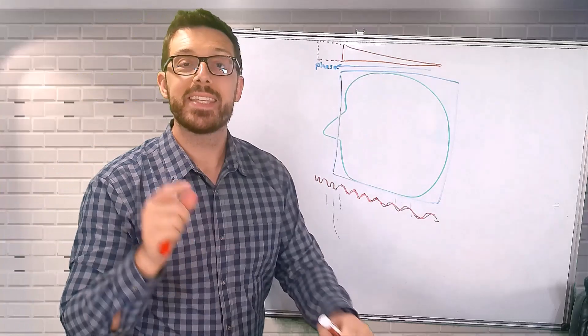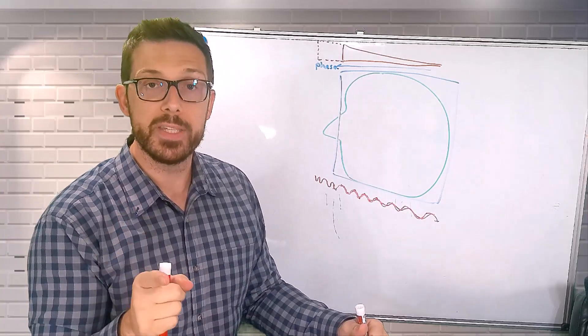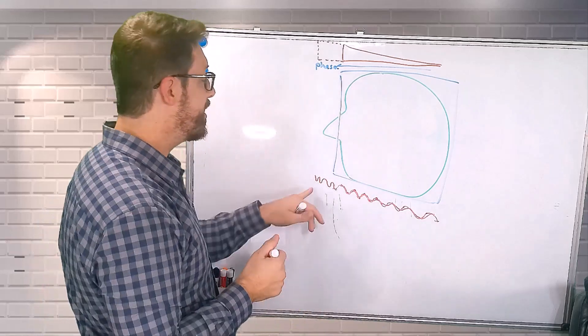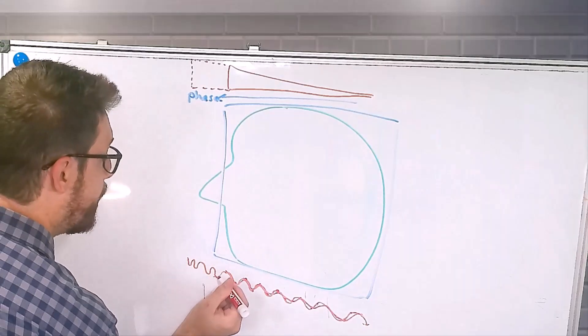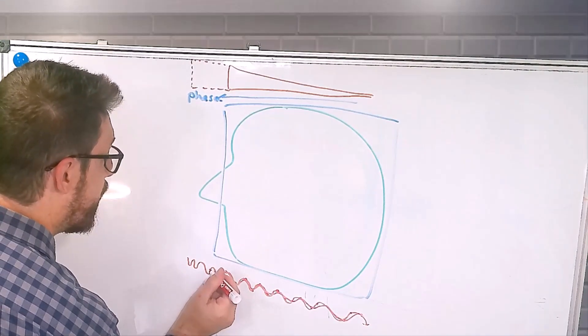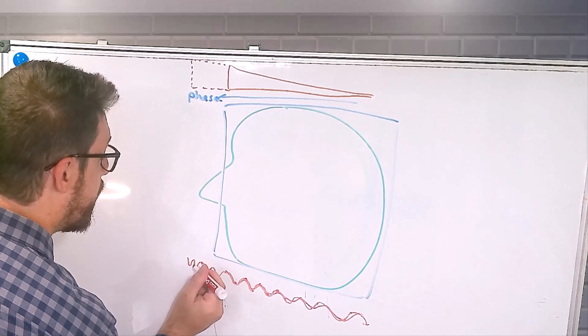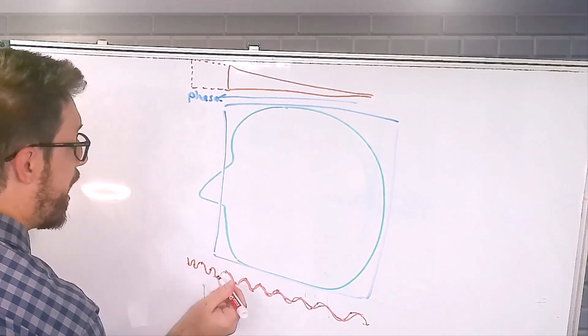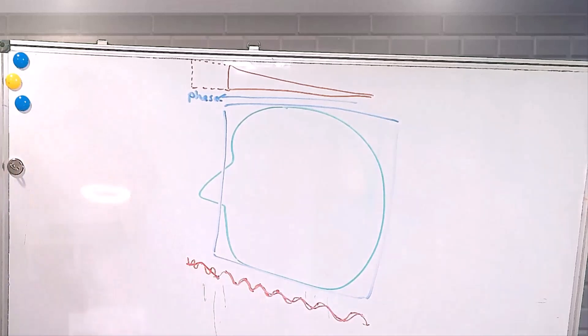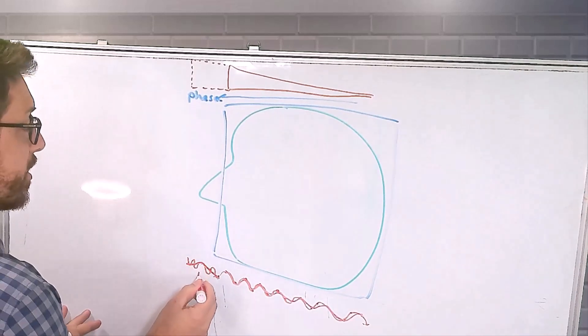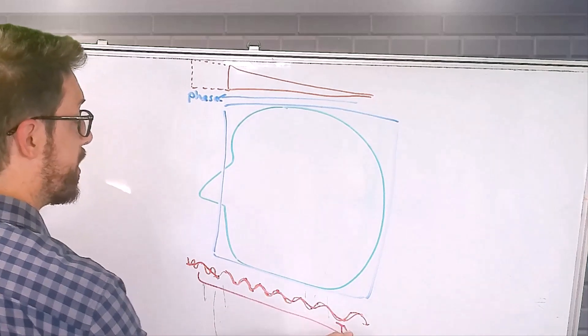So I use that same Nyquist's frequency, that same sampling frequency, and I try to sample frequencies outside of my field of view. I'm going to go ahead and encode them slightly different, incorrectly. And this almost looks like this frequency over here.